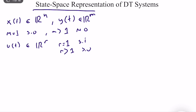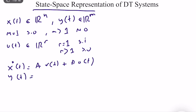Then we write the state equation: x-dot(t) = A·x(t) + B·u(t). This is the state-evolution equation — the main critical equation for us. And we have y(t), which is the output equation, an algebraic equation: y(t) = C·x(t) + D·u(t). This is a differential equation and the output is an algebraic equation. Both are linear because it's a linear time-invariant system.